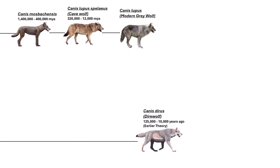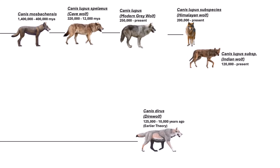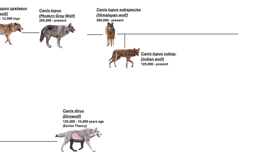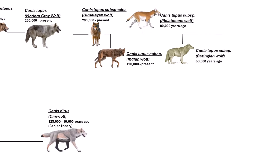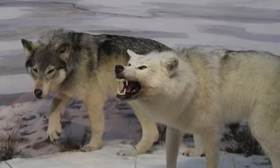The modern species of grey wolves have existed for around 250,000 years and have given rise to several subspecies and related populations over time. One of the earliest to branch off was the Himalayan wolf, separated from other grey wolves around 200,000 years ago, adapting to life in the high-altitude regions of Tibet and the Himalayas. Next came the Indian plains wolf, which branched out around 120,000 years ago, becoming suited to the dry, open grasslands of the Indian subcontinent. Later, during the Ice Age, a population known as the Pleistocene wolf diverged around 80,000 years ago, and around 50,000 years ago another branch — the Beringian wolf — appeared in the regions of what is now Alaska and eastern Siberia.